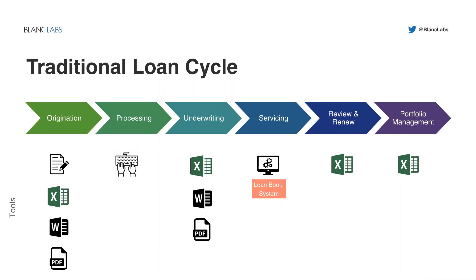Pen and paper and paper-based work on underwriting has always been there and still is, but more and more we see other tools like Excel, Word, and PDF being used within all of the different steps of the process, especially within underwriting, review, and portfolio management. On the servicing side, there has always been the loan book of record system — the system that really brings everything together as the formal and official book of record for servicing.